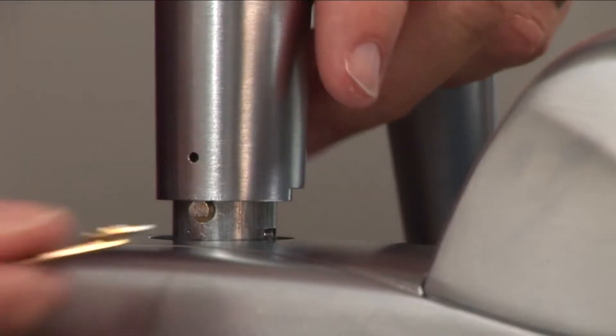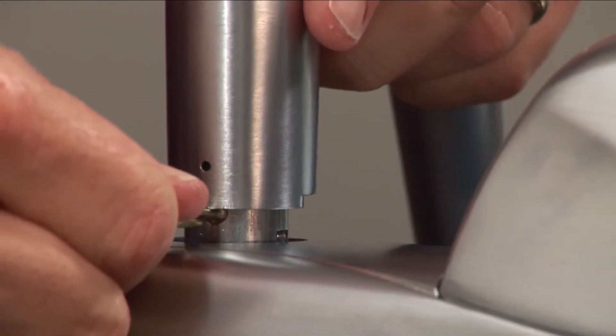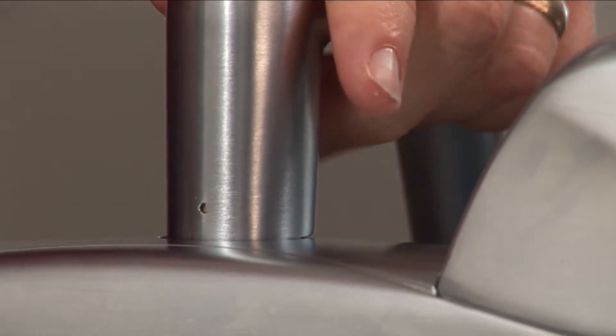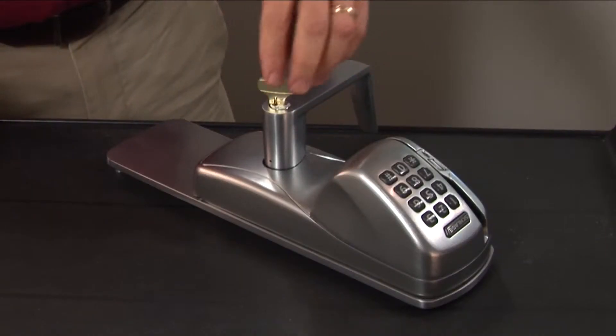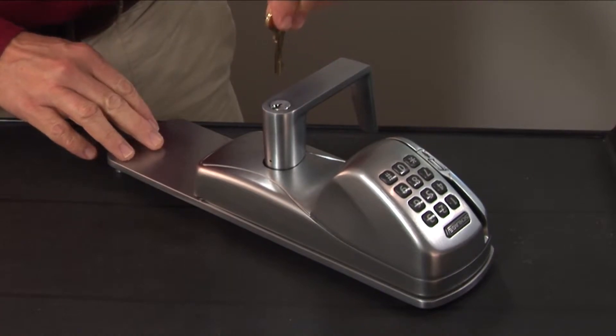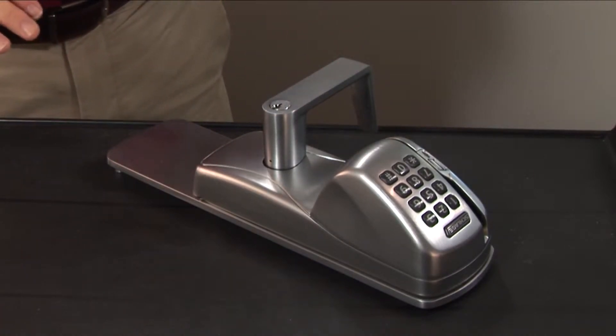Depress the knob stop pin using the lever removal tool and continue pushing the lever on until you hear a click. Check that the lever and cylinder have seated correctly by turning the key and removing it from the cylinder.